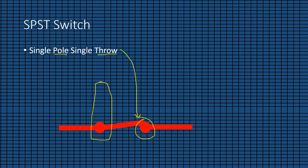As you can see here, the arm of the switch is falling over the circle or the throw, and there is only one arm and only one circle or one throw. So there is single pole and single throw. These single pole and single throw switches we use in our home daily and they are the basic type of switches. We also use them in most torches. A normal example is our household switches which we use in the kitchens, in the living room, and in the bedrooms.